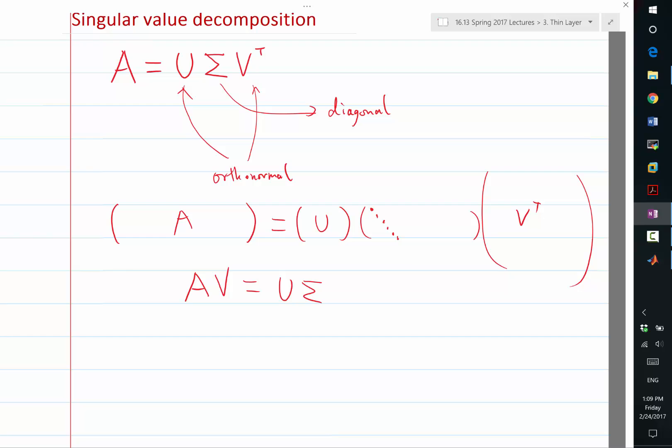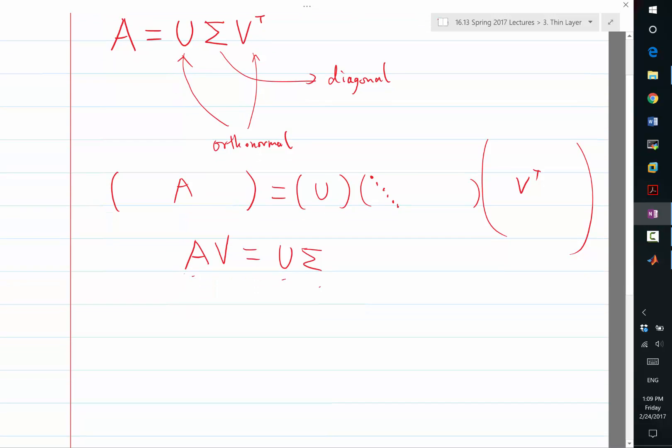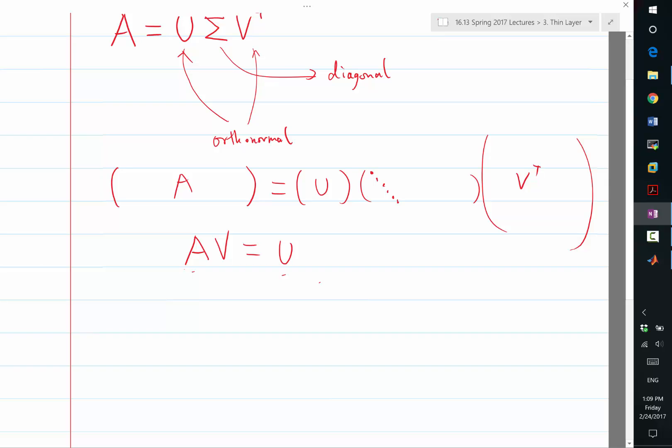Okay, and in particular, this equation has to be true column-wise. So every column of the matrix AV has to be equal to the corresponding column of U sigma. And if you know how to do matrix multiplication, and if you remember, sigma is this matrix, right?